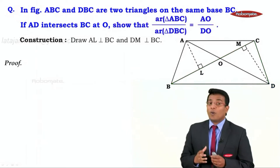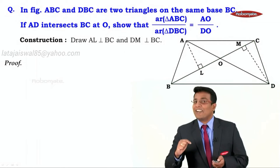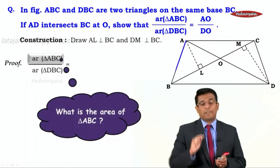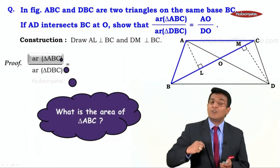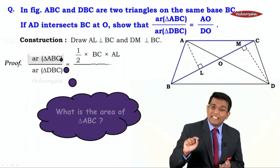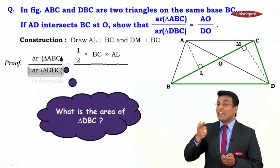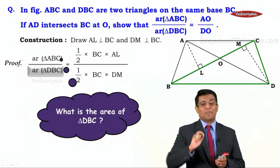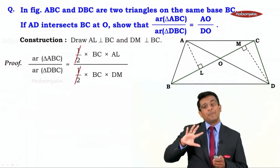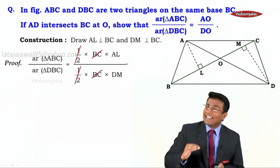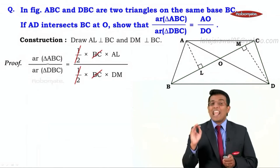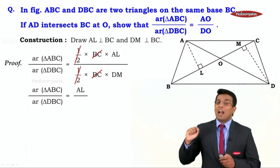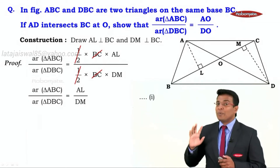We did this construction because we want the area of a triangle. So consider area of triangle ABC upon area of triangle DBC. Area of triangle ABC is half into BC into AL, and area of triangle DBC is half into BC into DM. The halves and the BC cancel, giving us area of triangle ABC upon area of triangle DBC equals AL upon DM. Let us call this Result 1.